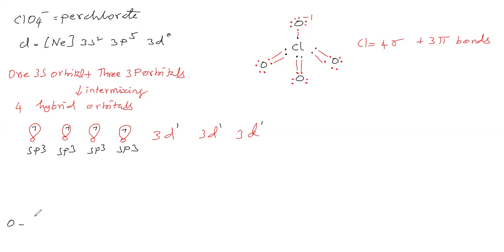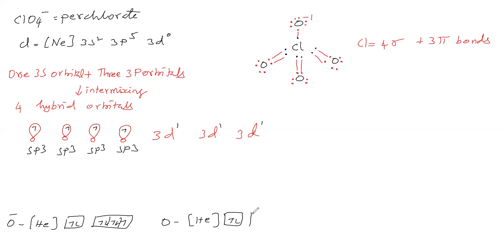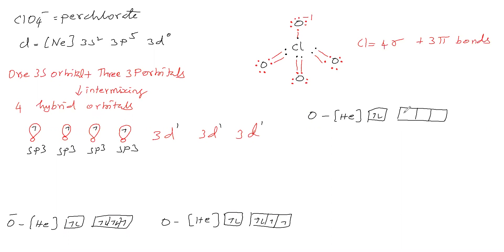Oxygen's electronic configuration is helium 2s² 2p⁴, and O⁻ has configuration helium 2s² 2p⁵. All four sigma bonds are formed by sp³ orbital of chlorine and p orbital of oxygen (sp³–p overlapping).